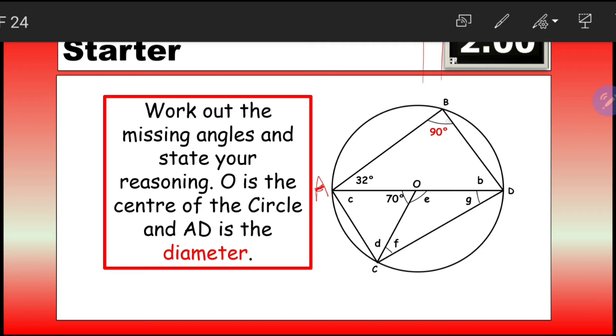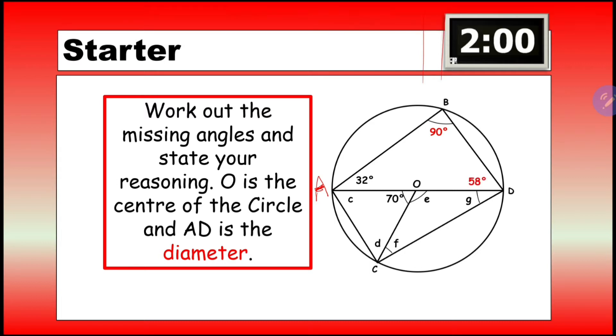If that's 90 and that's 32, then B is going to be 90 plus 32 minus the answer of that from 180, and that's going to give us 58 degrees.